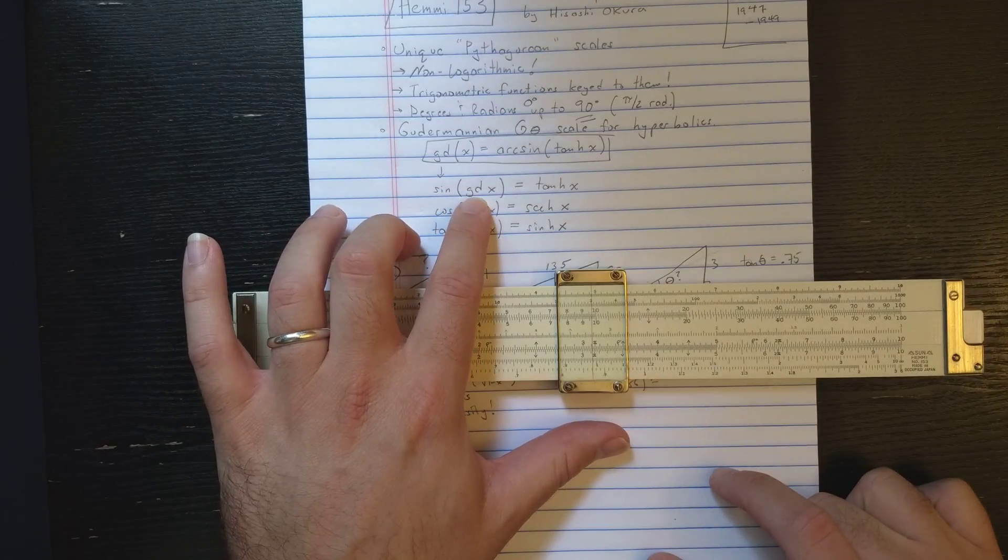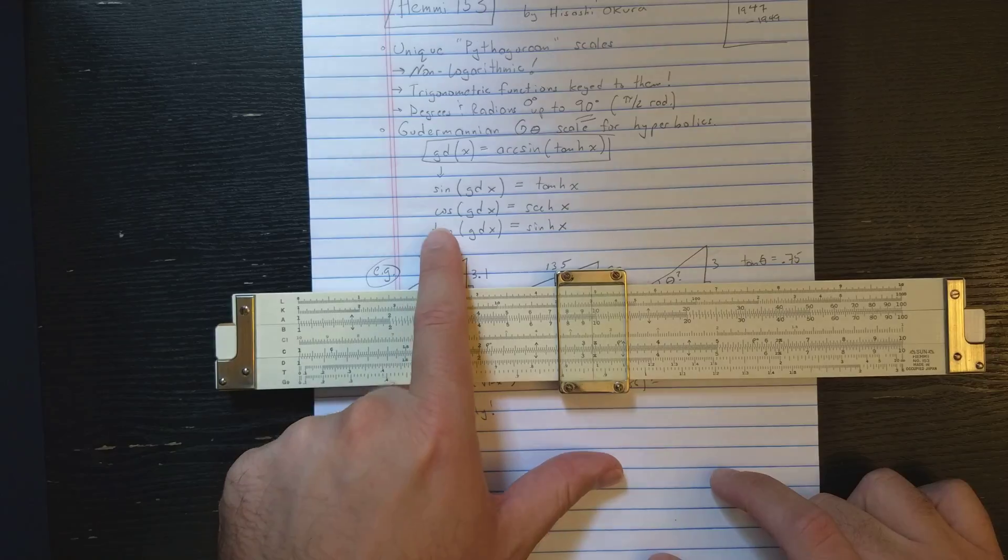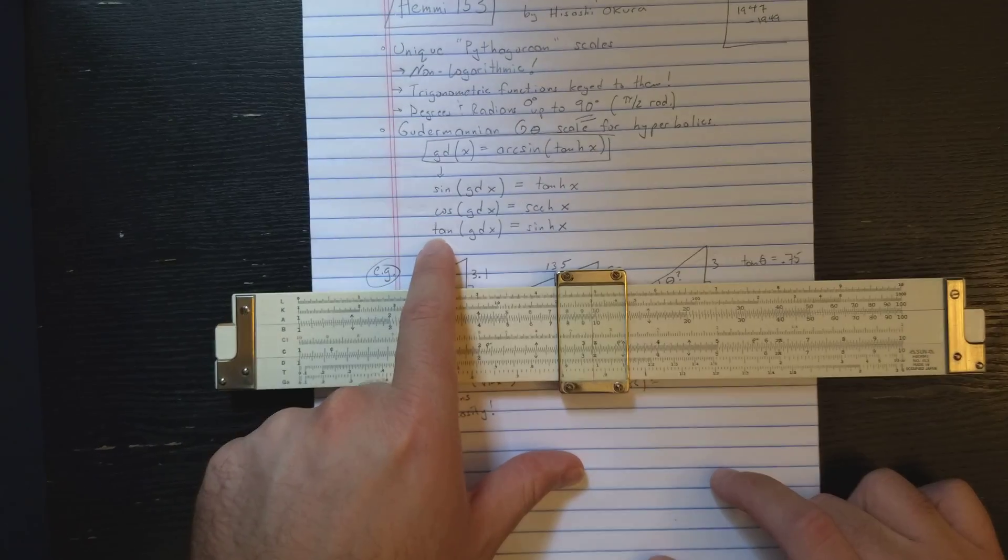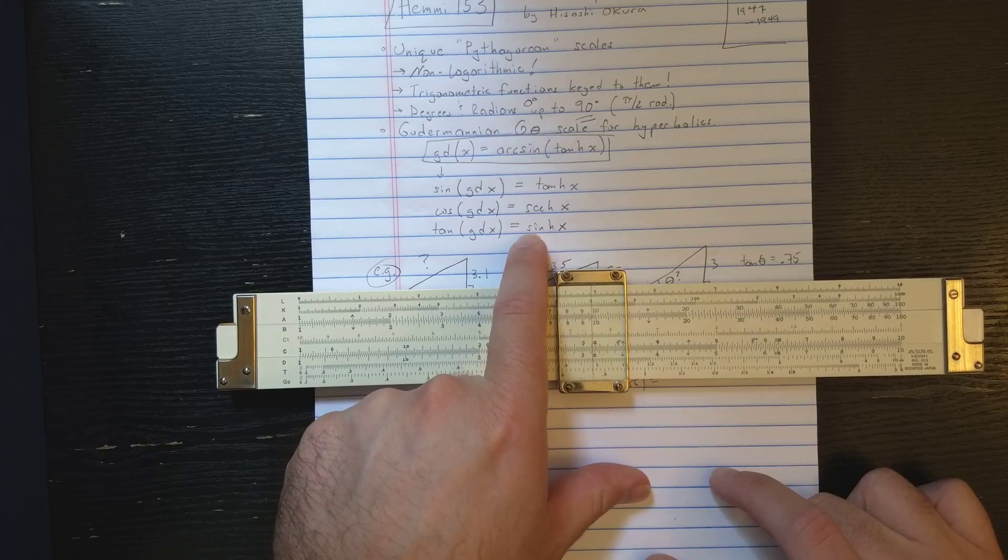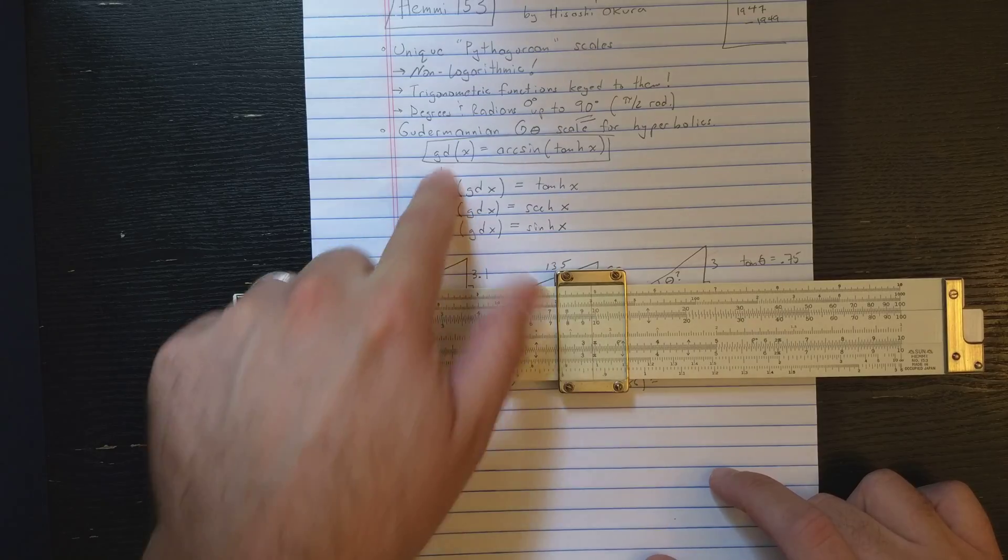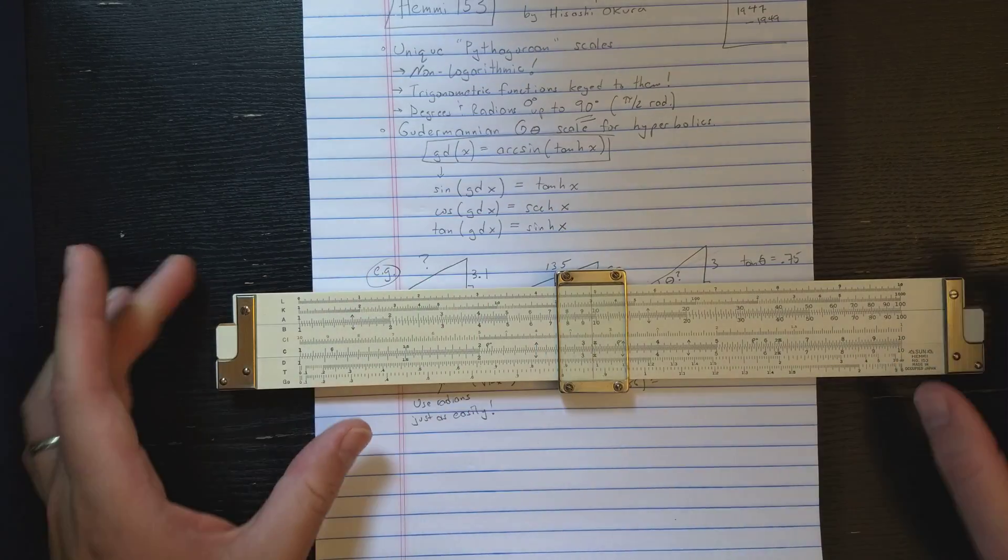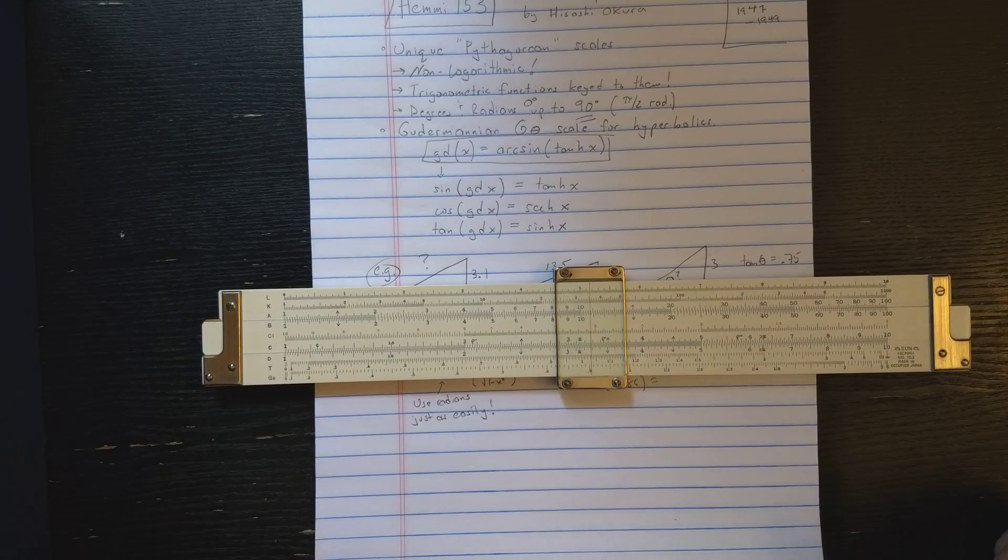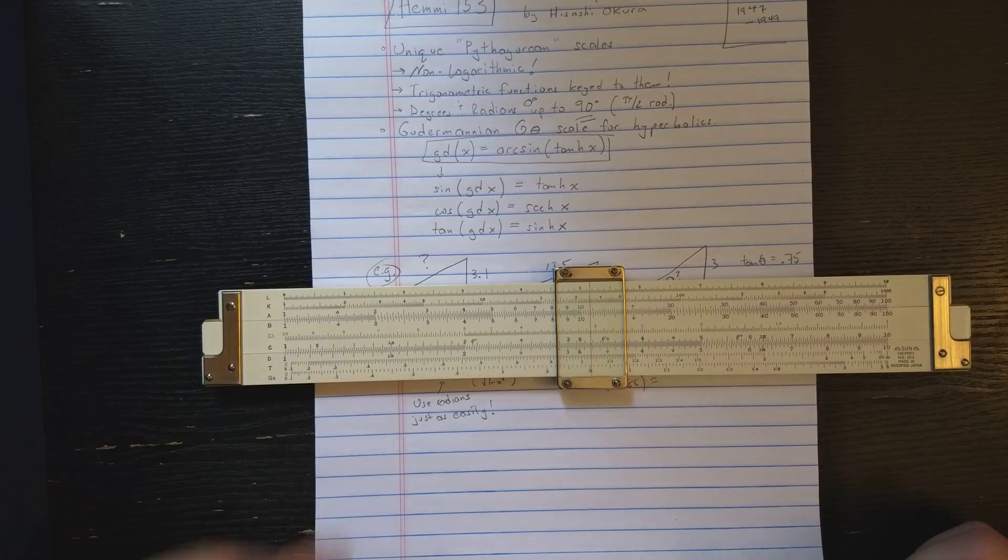What this function does is it relates the trigonometric functions to the hyperbolic trigonometric functions. Here are three basic identities. Sine of the Goudermannian of X is equal to tanch X. Cosine of it is equal to the hyperbolic secant. And tangent of it is equal to the sinch function.